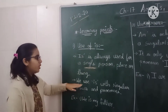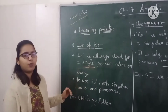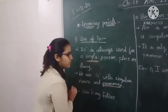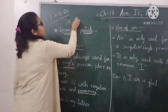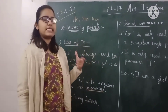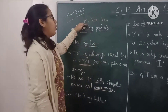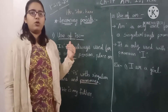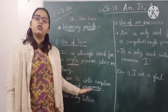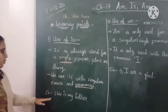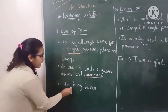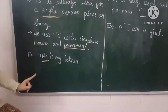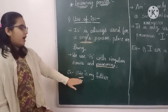Second point: we use 'is' with singular nouns and pronouns. In one sentence we don't use a name two times. If we talk about a boy, then we use 'he'; if we talk about a girl, we use 'she' — these are pronouns. For example: 'He is my father.' Father means a single person, so we used 'is' because it was a pronoun referring to a single person.